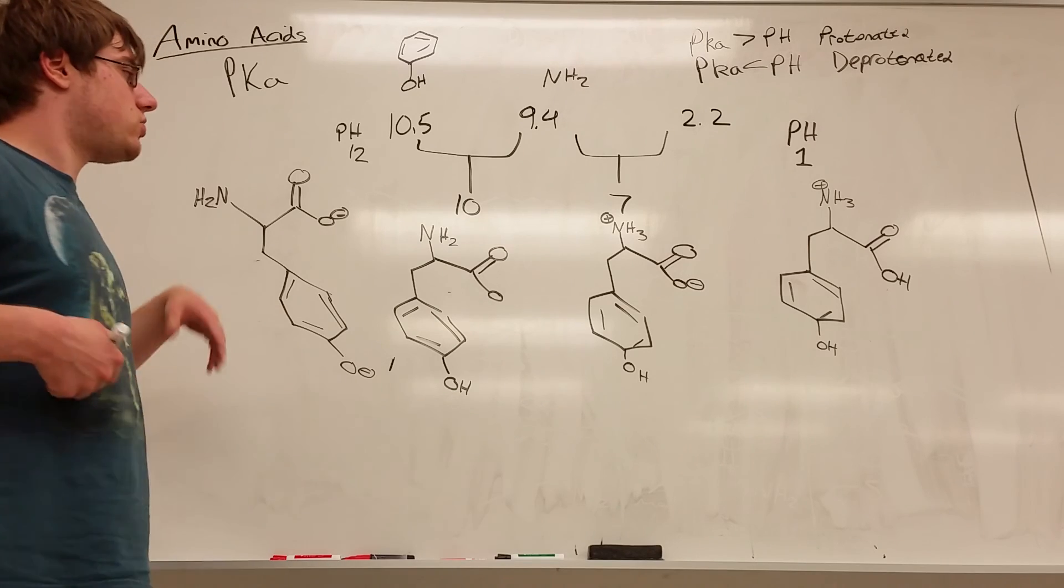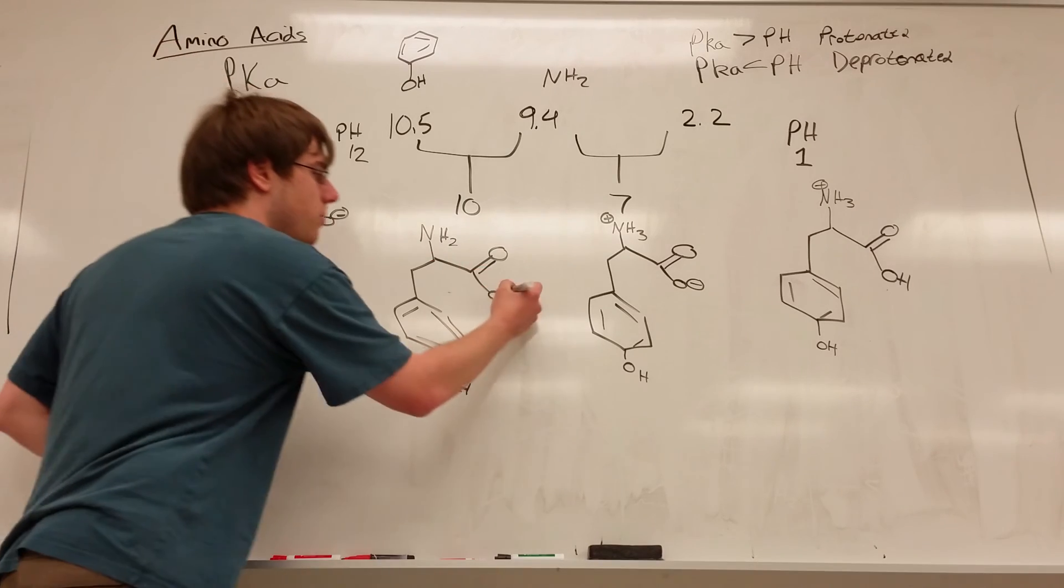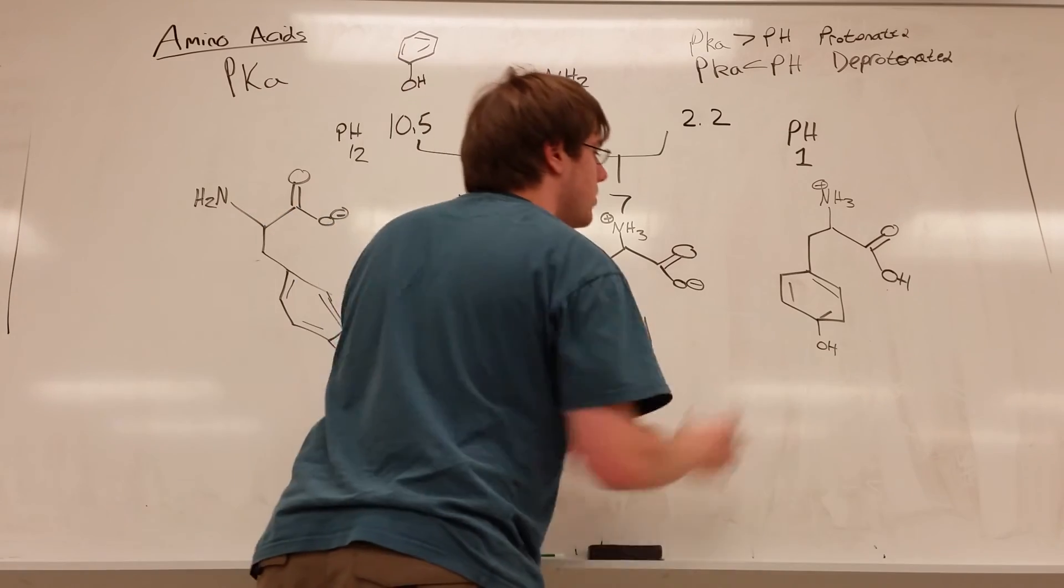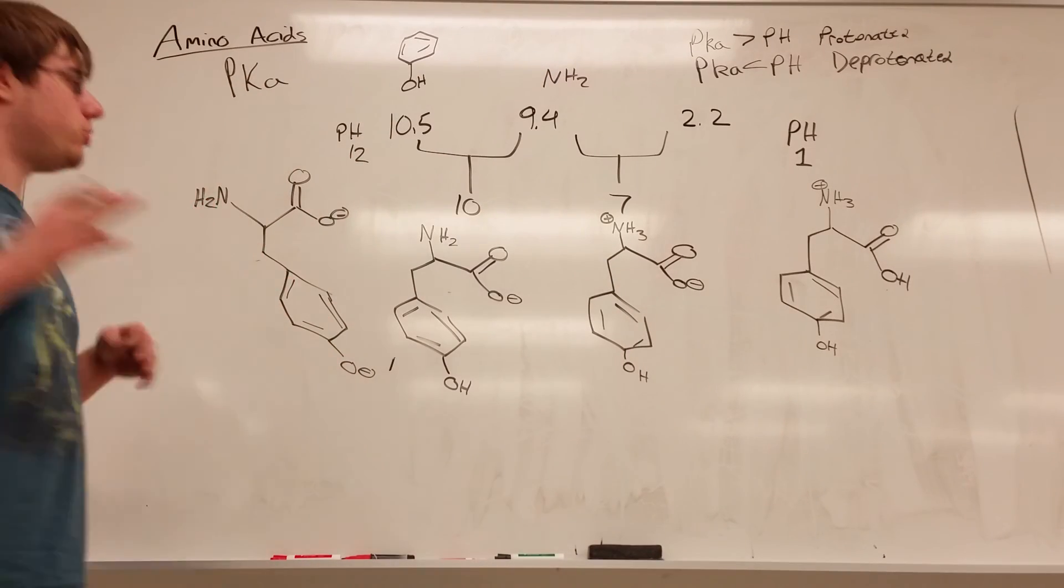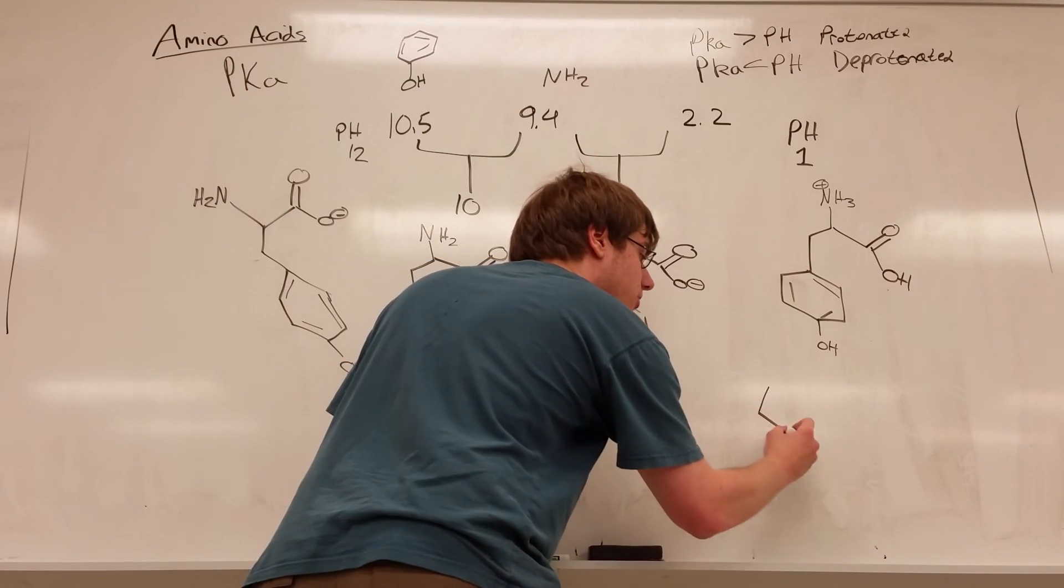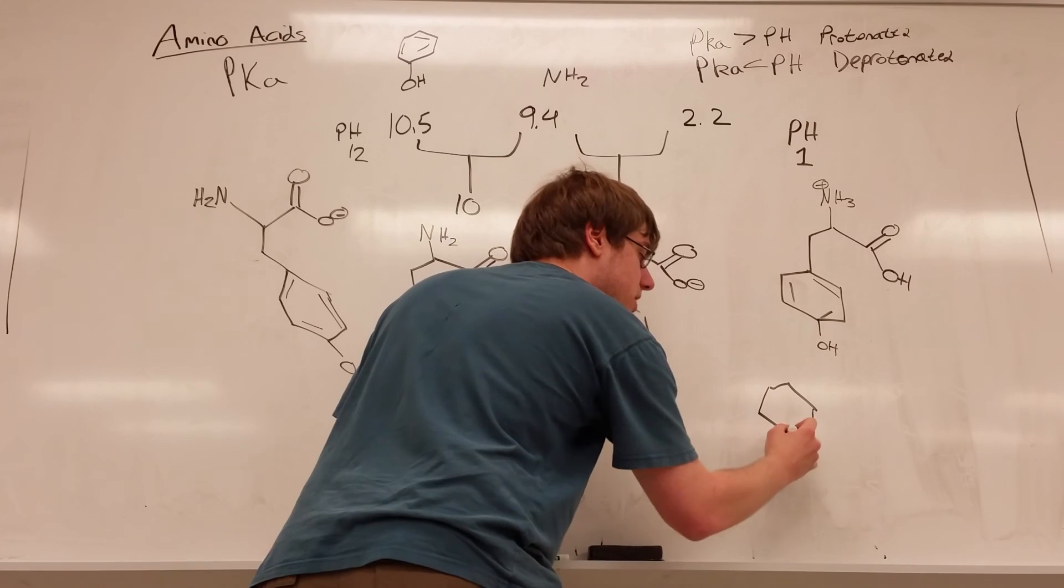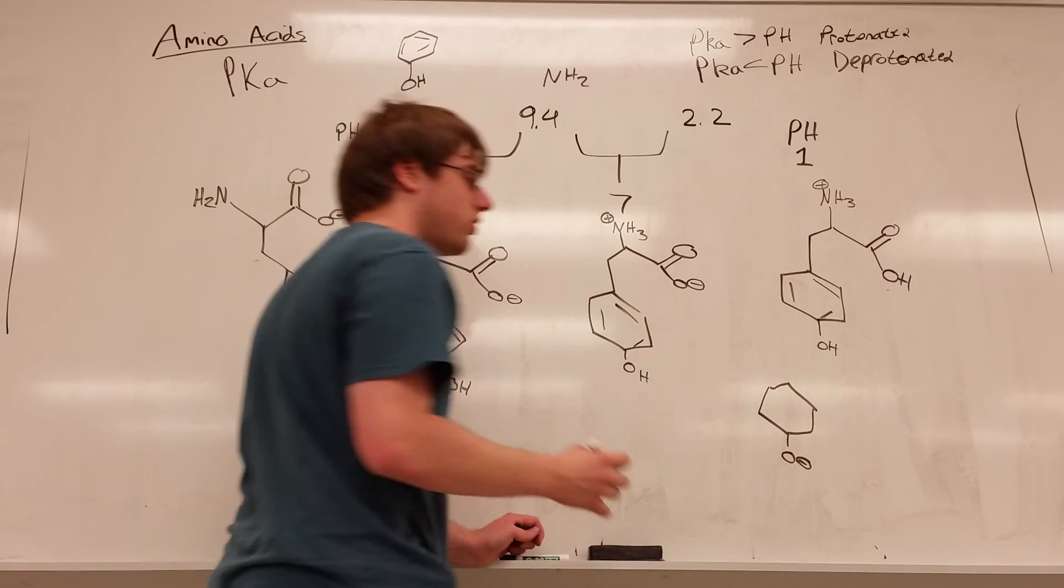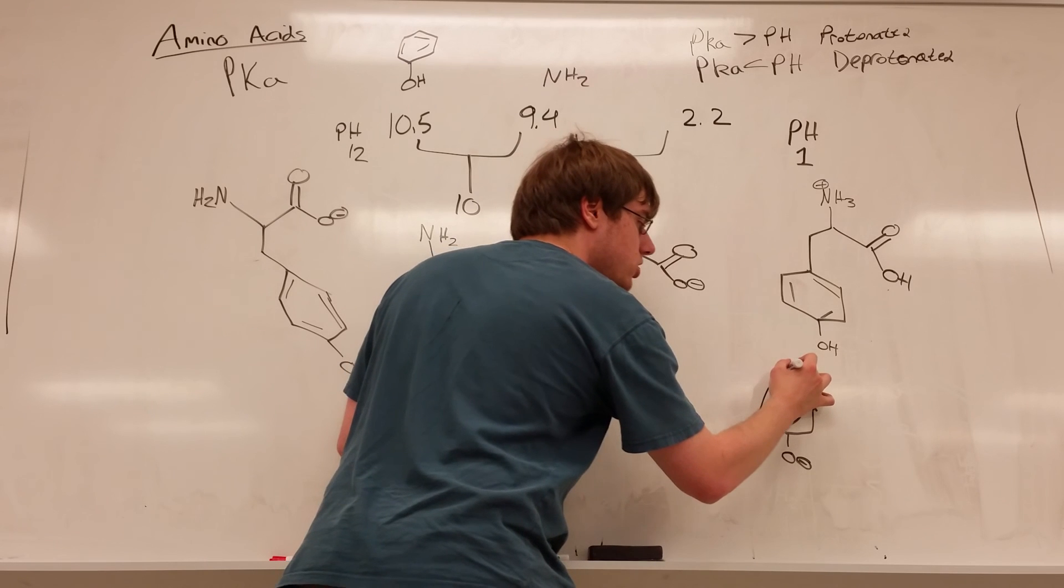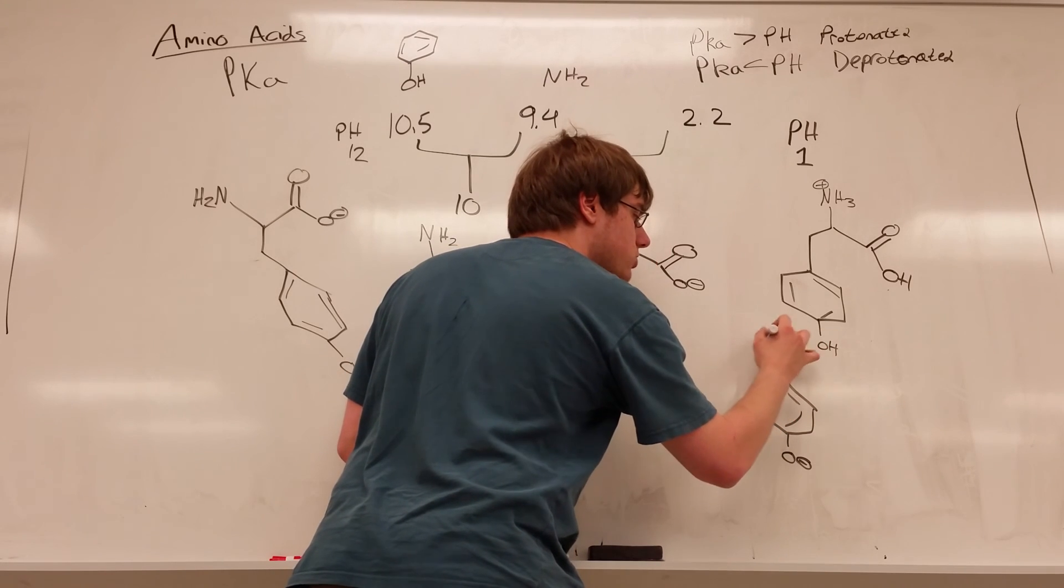So the answer to this question would be something that doesn't match up with any of these structures. These are the four structures that will exist in some appreciable amount, and your multiple choice question, your answer to the multiple choice would be something like this, where you have, let's say the benzene, the tyrosine R group being O minus, but the NH2 group is NH3 positive.